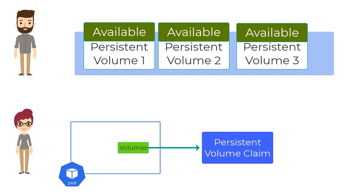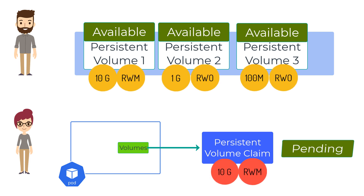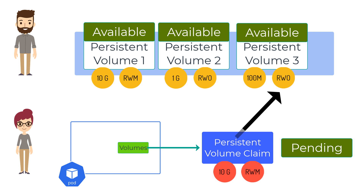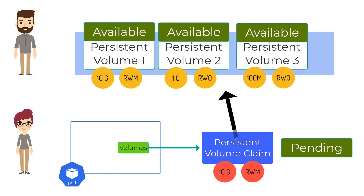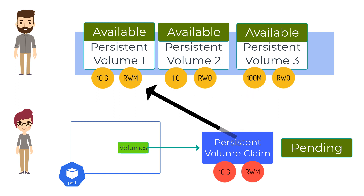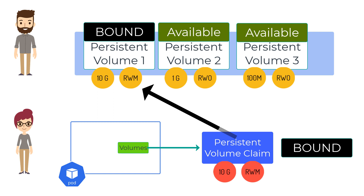When this persistent volume claim is created, the Kubernetes controller automatically searches for the best-suited persistent volume from the pool of available persistent volumes based on size and access mode. Until it finds a match, the persistent volume claim will be in a pending state. Once it matches a persistent volume to a persistent volume claim, the persistent volume is now bound to the persistent volume claim.